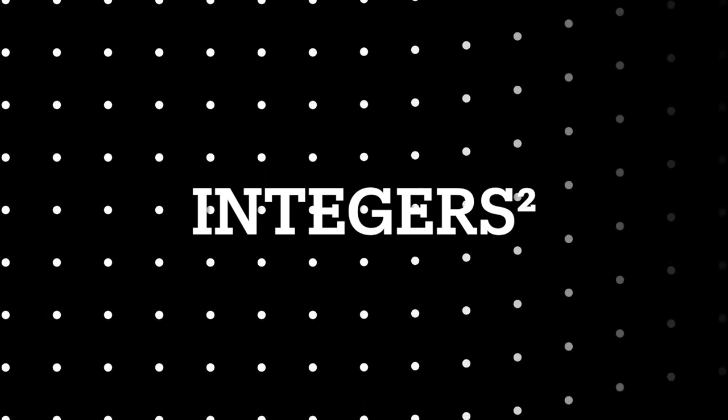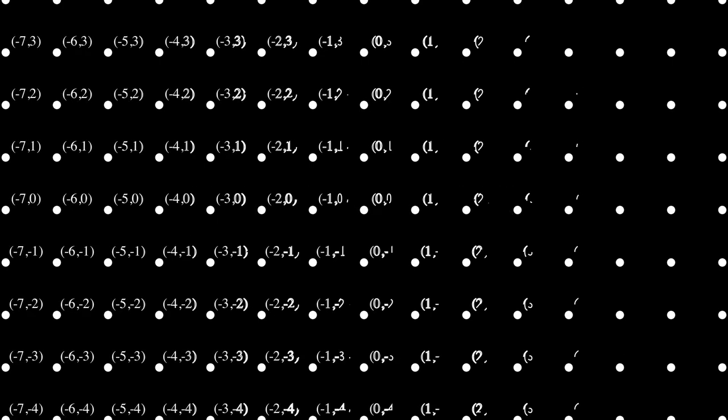Starting by Z^2, which is basically the integers and the integers again. An element of Z^2 is a pair of two elements of Z, which is the integers.